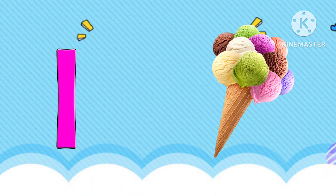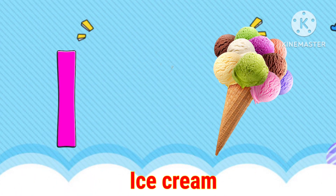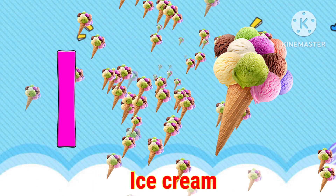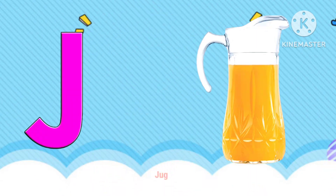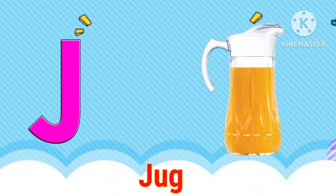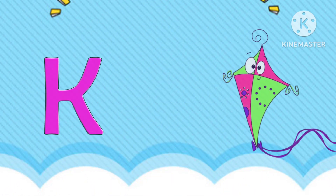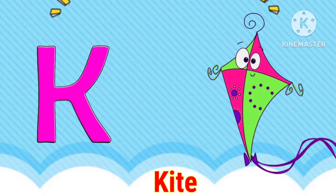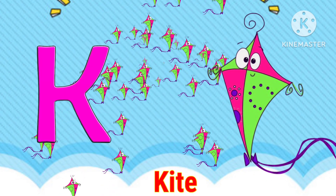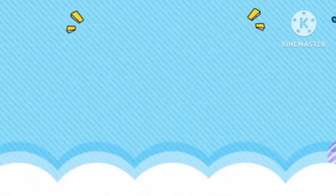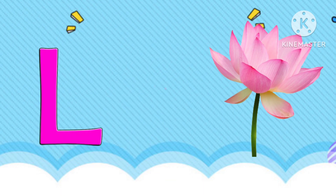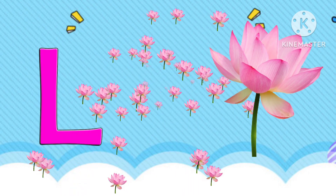I. I for ice cream. J. J for jar. K. K for kite. L. L for lotus.